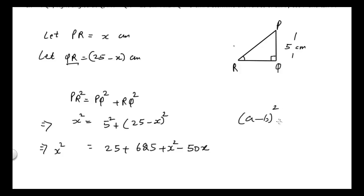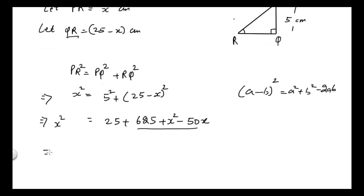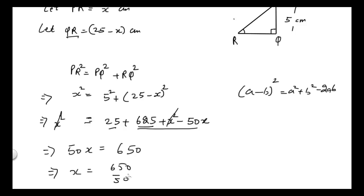This is the expansion of (a minus b) squared, which is a squared plus b squared minus 2ab. The X squared terms cancel from both sides, and bringing minus 50X to the left gives 50X equals 625 plus 25, which is 650.